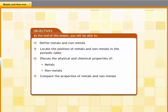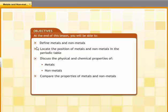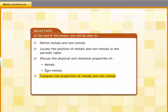At the end of this lesson, you will be able to define metals and non-metals, locate the position of metals and non-metals in the periodic table, and discuss and compare the physical and chemical properties of metals and non-metals.